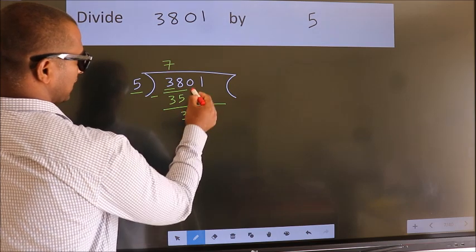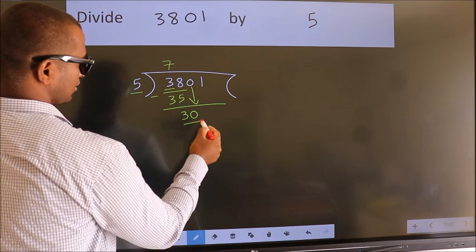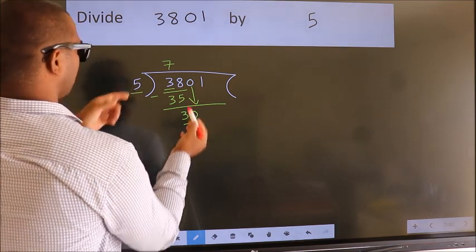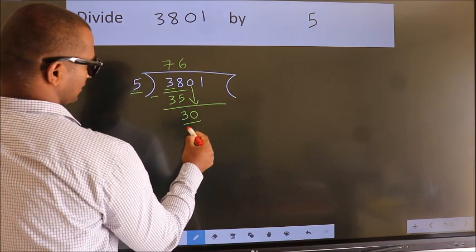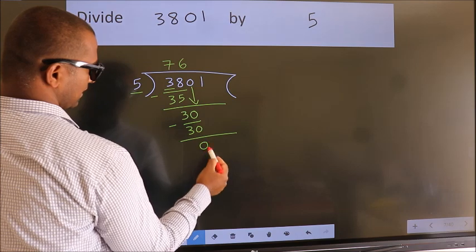After this, bring down the beside number. So 0 down. So 30. When do we get 30? In 5 table. 5 times 6 is 30. Now we subtract. We get 0.